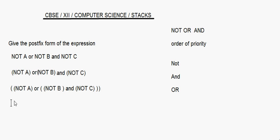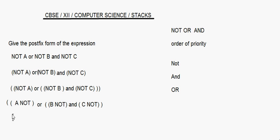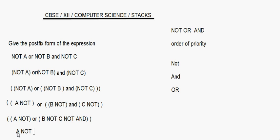Now first, the outermost bracket: this becomes 'a not'. Let's put this in bracket — so we have 'a not or', and here you have got two inner brackets: 'b not', converting that to postfix, and 'c not'. So: 'a not or', and now 'b not and c not' becomes 'b not c not and'.